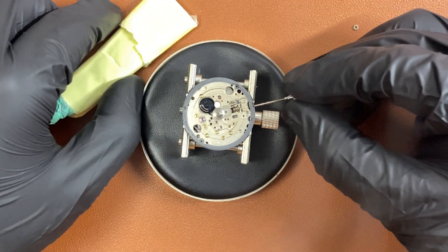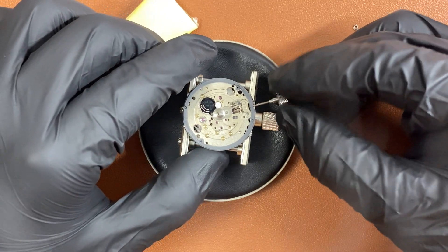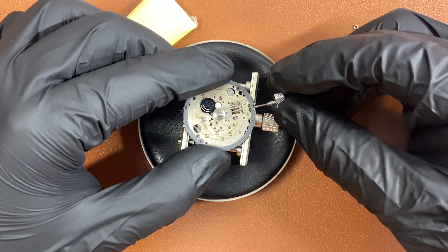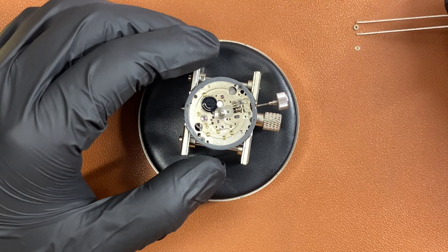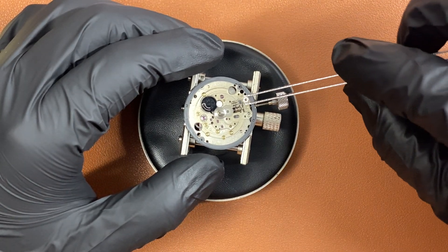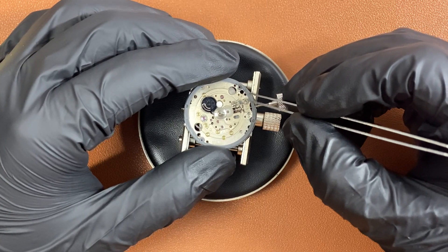Once the gear is in, you can now put in your stem to keep the wheel in place. And we can now start assembling back the movement. Again, feel free to refer to a much more detailed video down in the description below where they explain the exact steps to actually disassemble and assemble back the NH movement.